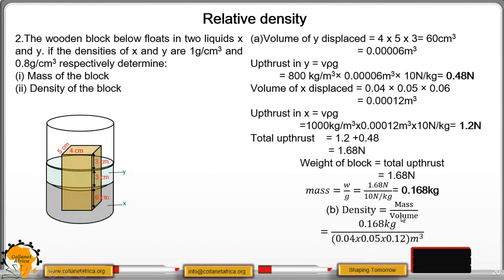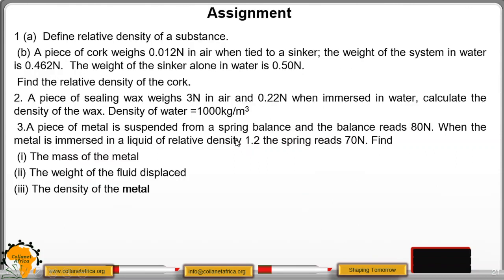Density of the block equals mass divided by volume. Volume of whole block: cross-section 0.04 × 0.05 m² times height 0.12 m equals 2.4 × 10⁻⁴ m³. Density equals 0.168 ÷ 2.4 × 10⁻⁴ equals 700 kg/m³. There is an assignment to practice what we have covered. Make sure you practice and attempt the assignment. Thank you and see you in the next lesson.